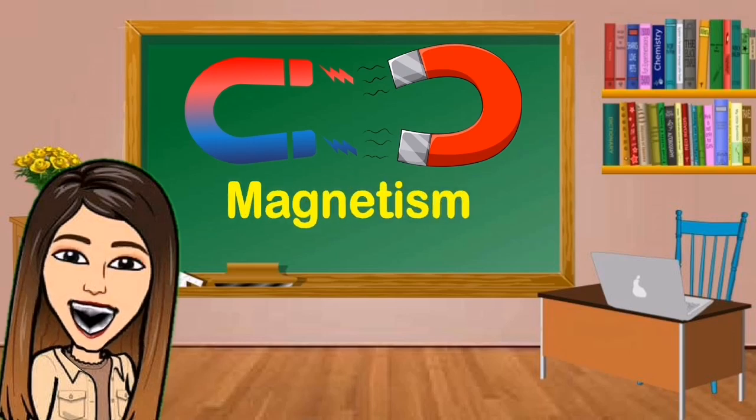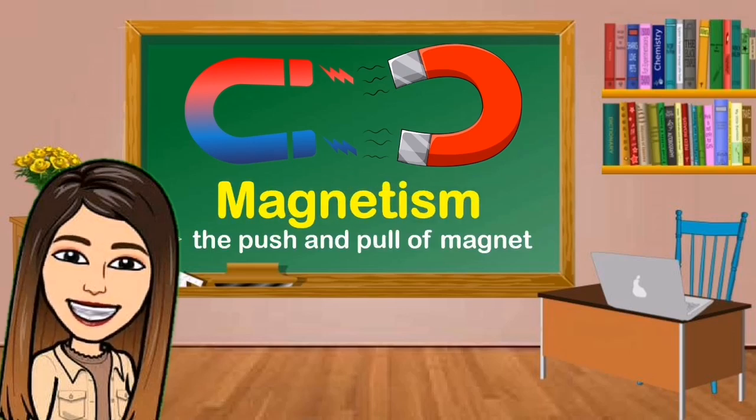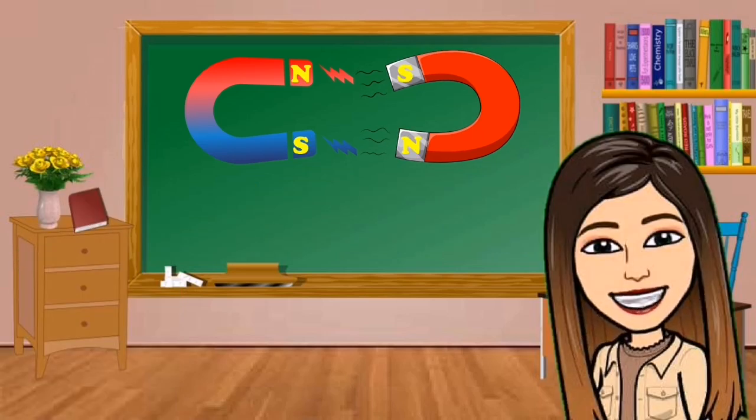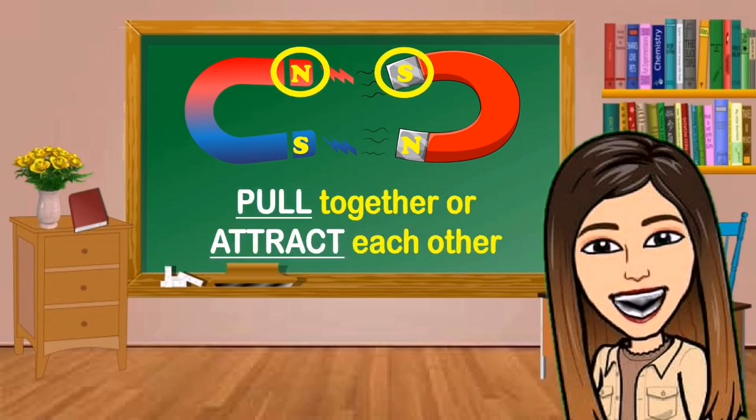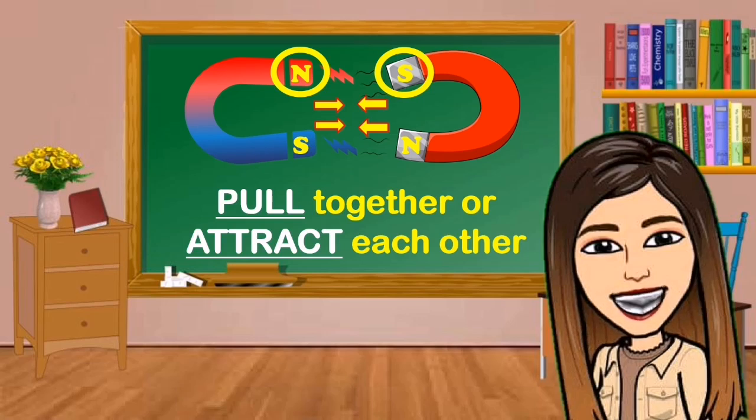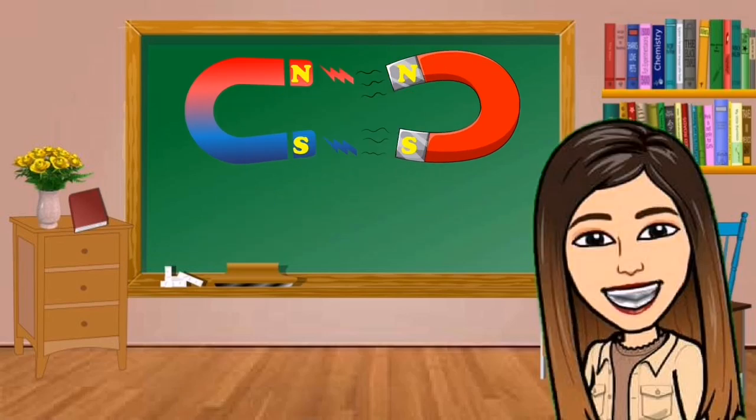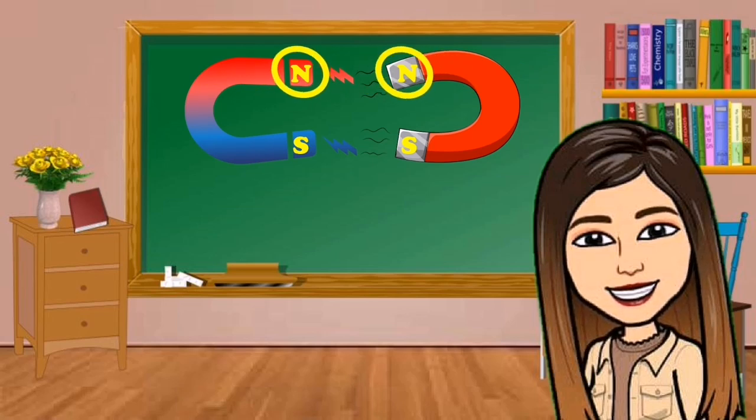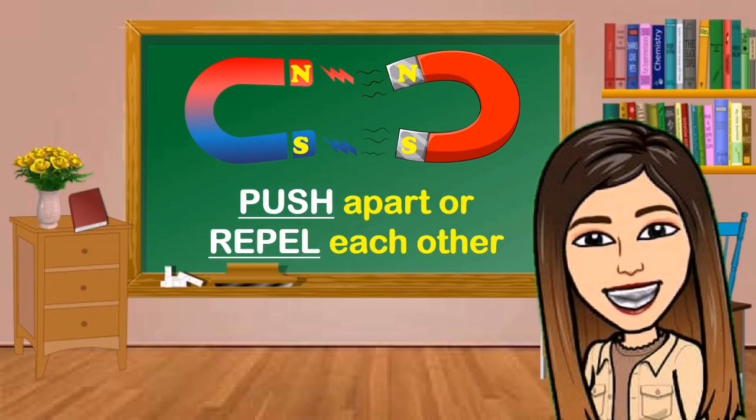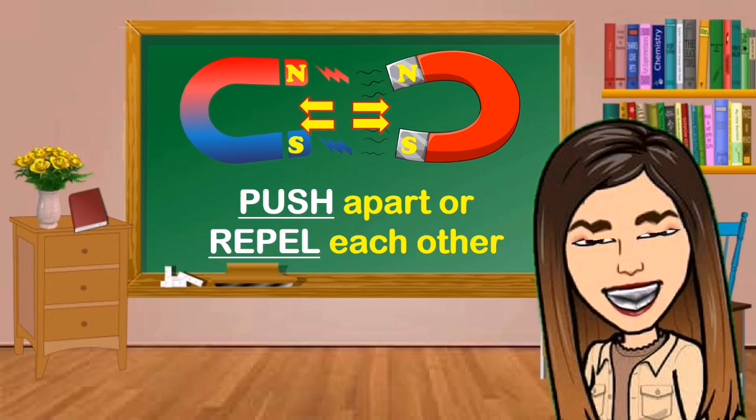It is called magnetism. Magnetism is the push and pull of magnet. If the poles are different, then they will pull together or attract each other. If the poles are same, then they will push apart or repel each other.